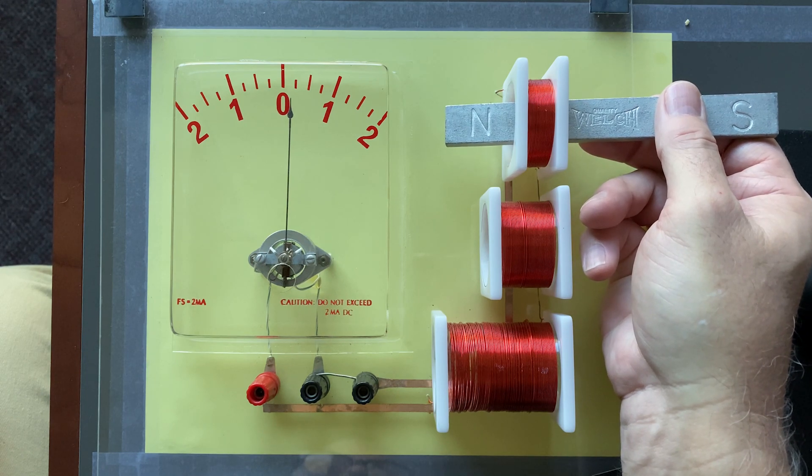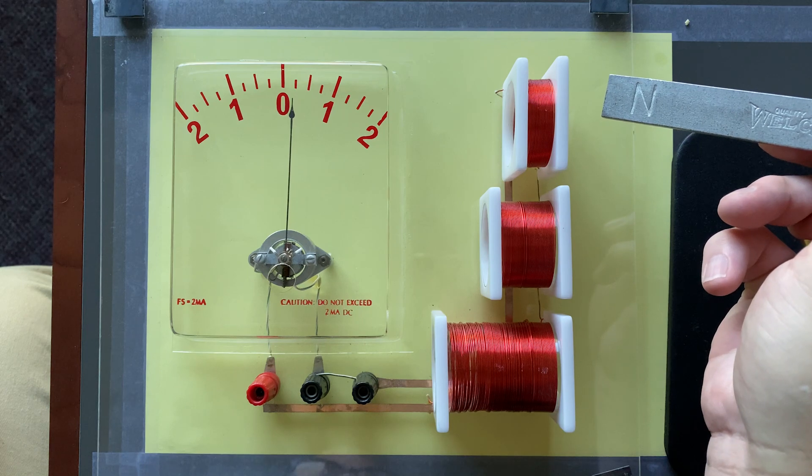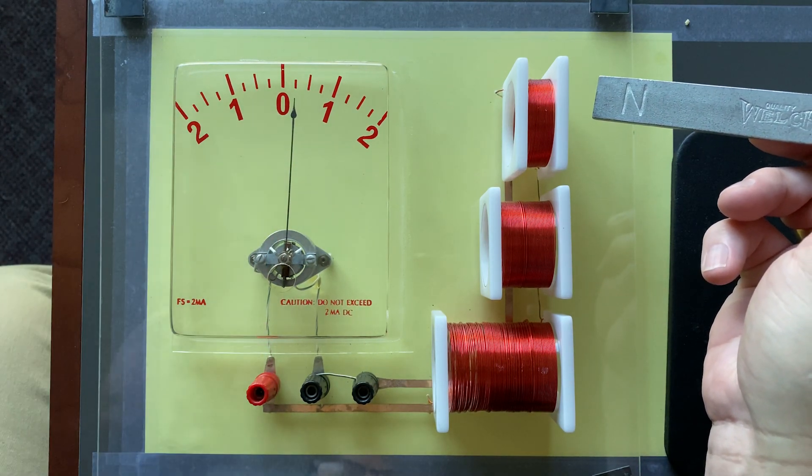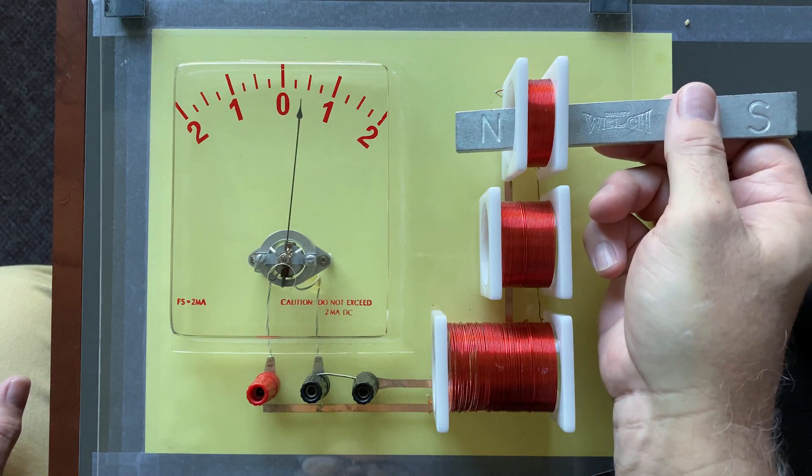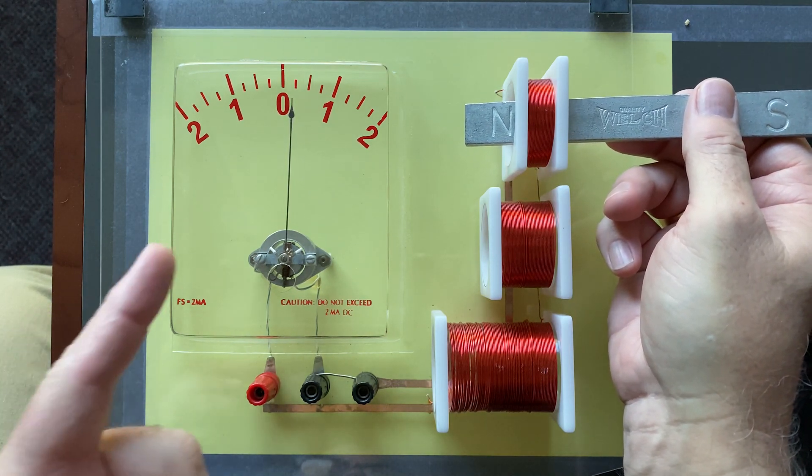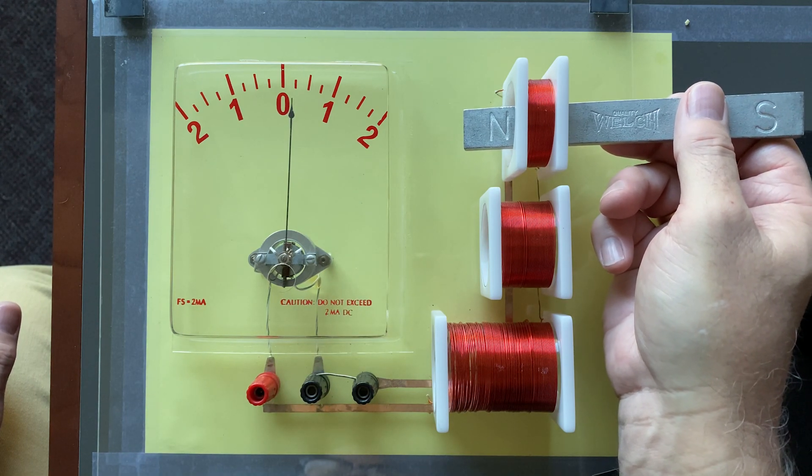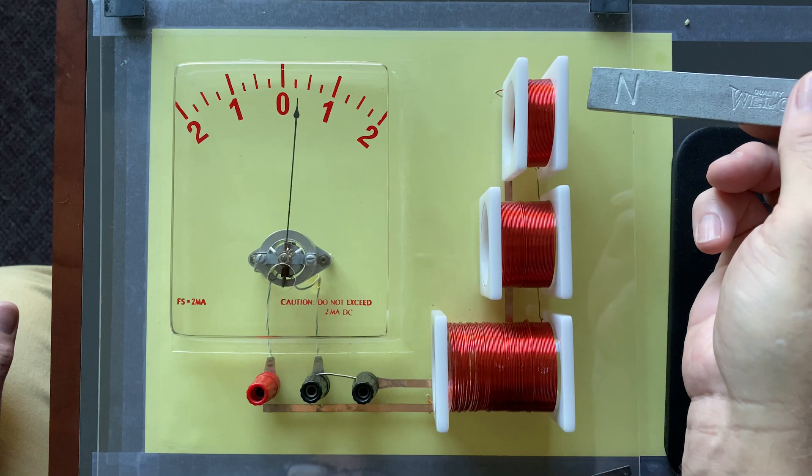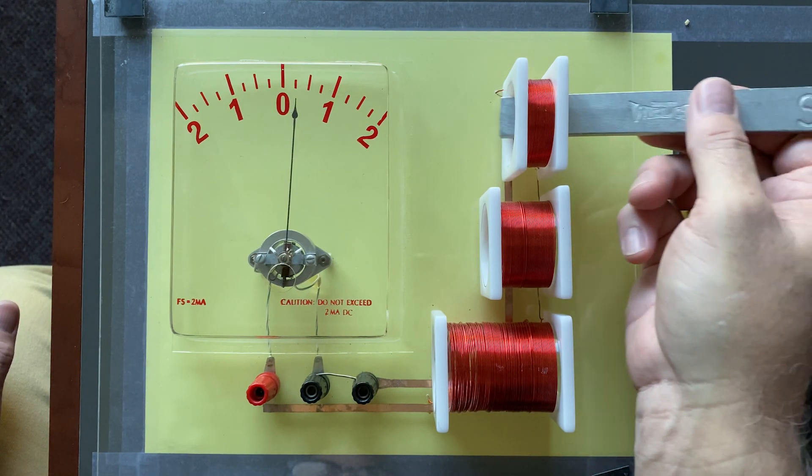Now, I'm going to pull it out, but I'm going to pull it out more quickly. Did you see something? Did you see the galvanometer deflect to the left? Now, I'm going to put it in more quickly. And when I did that, the galvanometer deflected to the right. So, pulling the north pole out, it deflects to the left. Putting the north pole in, it deflects to the right.